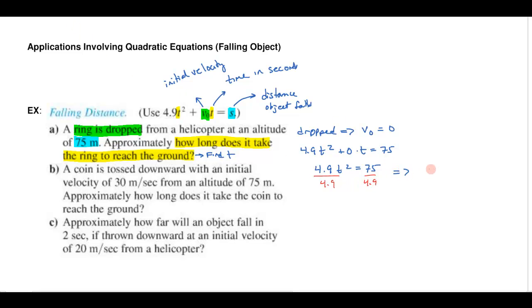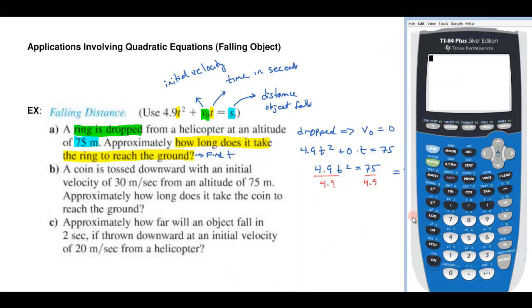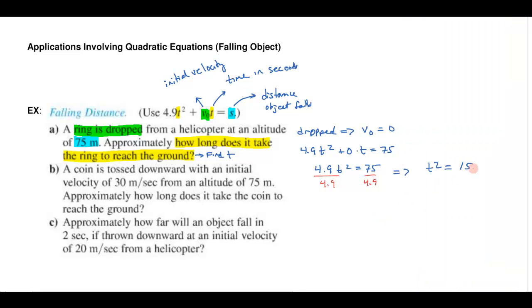So this would give me that t² is whatever 75 divided by 4.9 is. Let's do that on my calculator. 75 divided by 4.9 would be about 15.3 and so my T is going to be the square root. Technically plus or minus the square root but of course the negative root isn't going to be a player force in this answer.